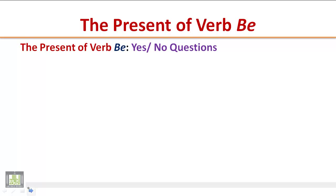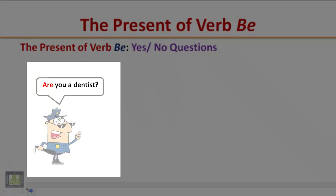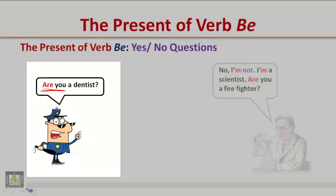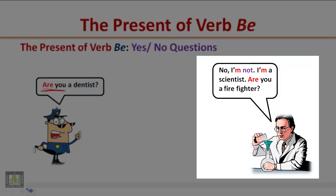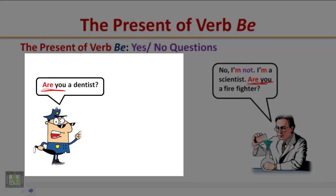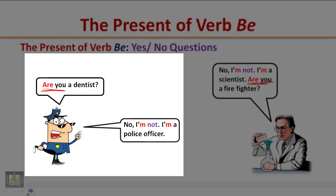The present of verb be: yes/no questions. Listen to the following short conversation and pay attention to the word order in yes/no questions. Are you a dentist? No, I'm not. I'm a scientist. Are you a firefighter? No, I'm not. I'm a police officer.